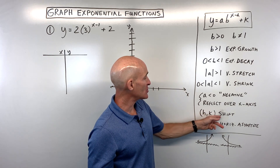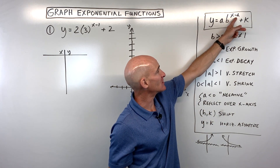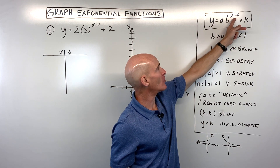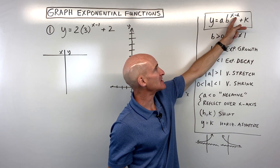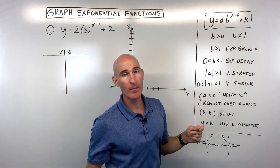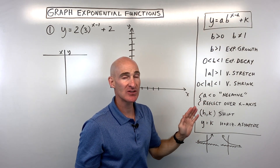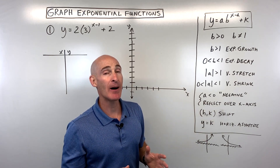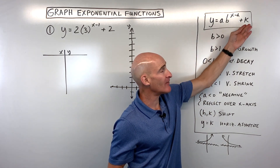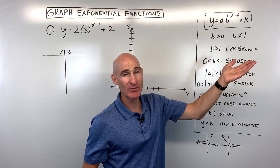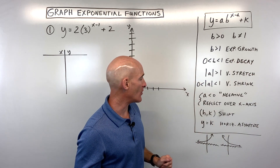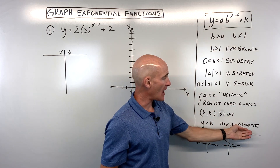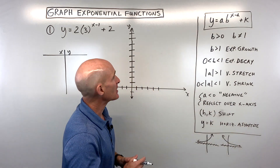The h and k are going to shift the graph — h shifts it left and right, and k shifts it up and down. Keep in mind, with x minus h: if it's x minus 2, it actually shifts it to the right 2; if it's x plus 2, it goes to the left 2 — it's the opposite of the sign. Whereas the k value, if that's plus 2 it goes up to positive 2, if it's negative 2 it goes down 2. And y equals k is going to be where our horizontal asymptote is.